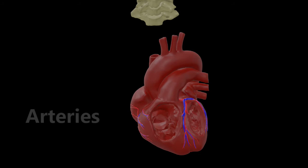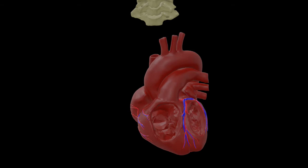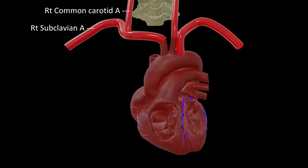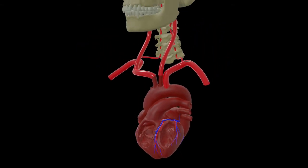Now we are in a position to move on to the arteries of head and neck. We can follow the journey of this oxygenated blood through the arteries. This oxygenated blood in the left ventricle is pumped into the aorta; the aorta makes an arch called the arch of aorta. The arch of aorta gives off three branches: the right brachiocephalic artery, the left common carotid, and the left subclavian. Remember there is no left brachiocephalic - the common carotid and subclavian emerge directly from the arch of aorta on the left side, but on the right side it comes out as the brachiocephalic artery which soon divides into right common carotid and right subclavian.